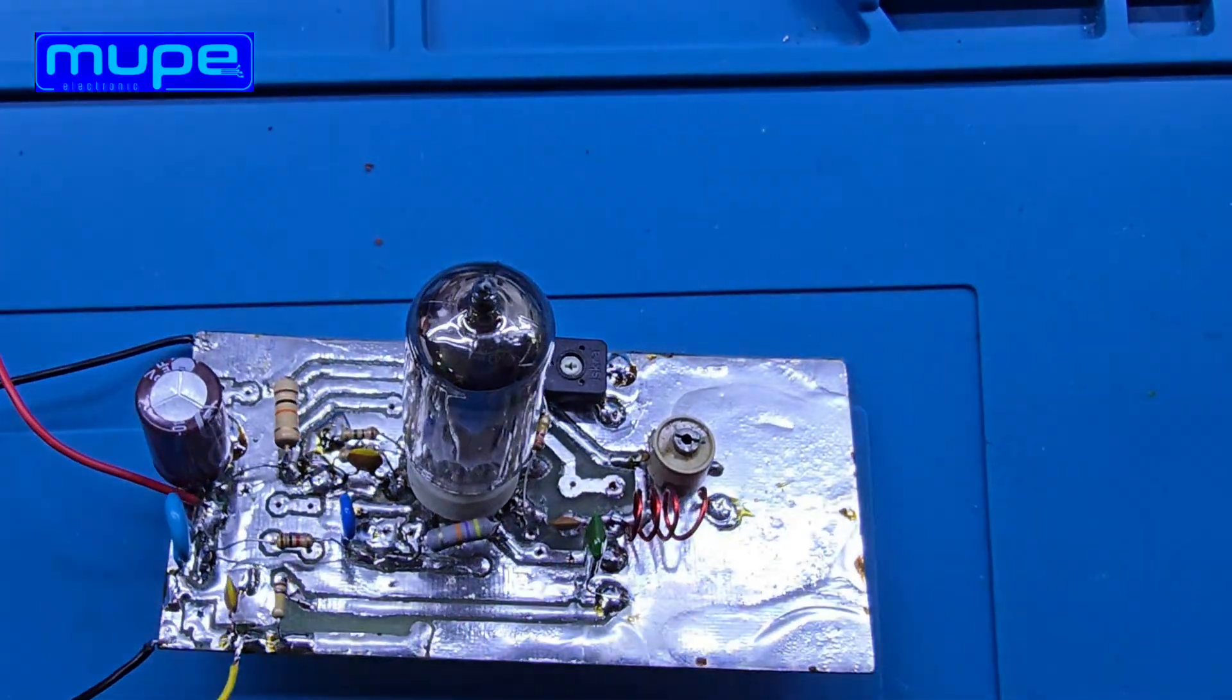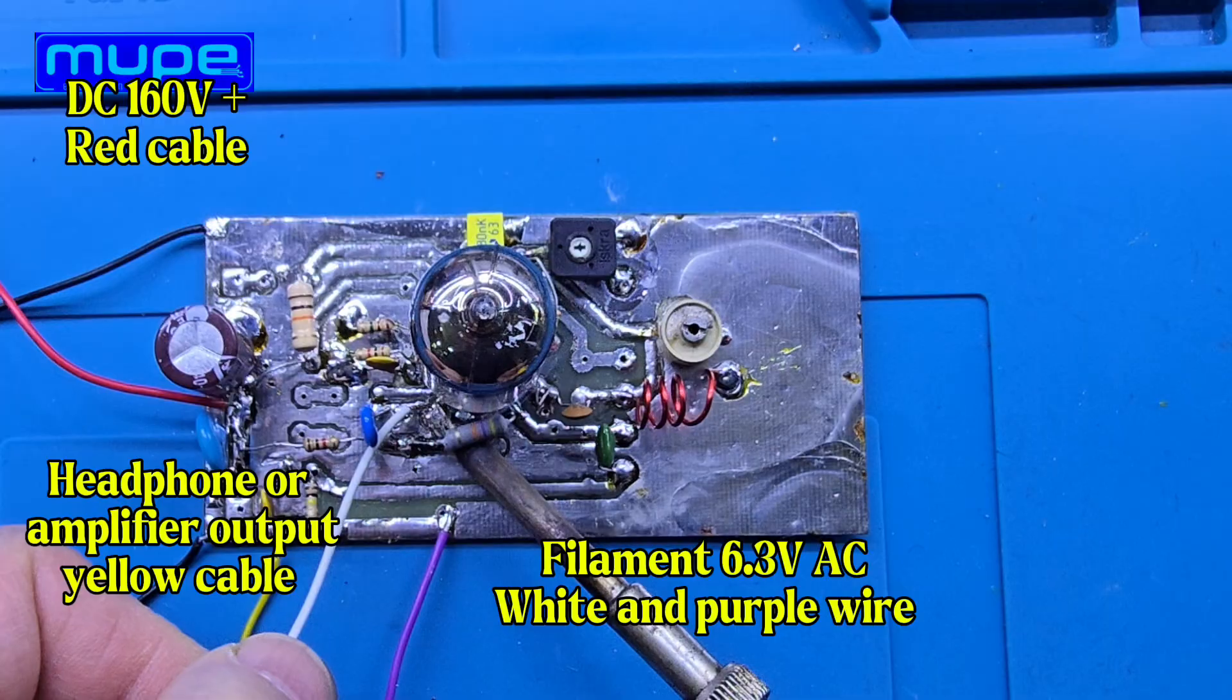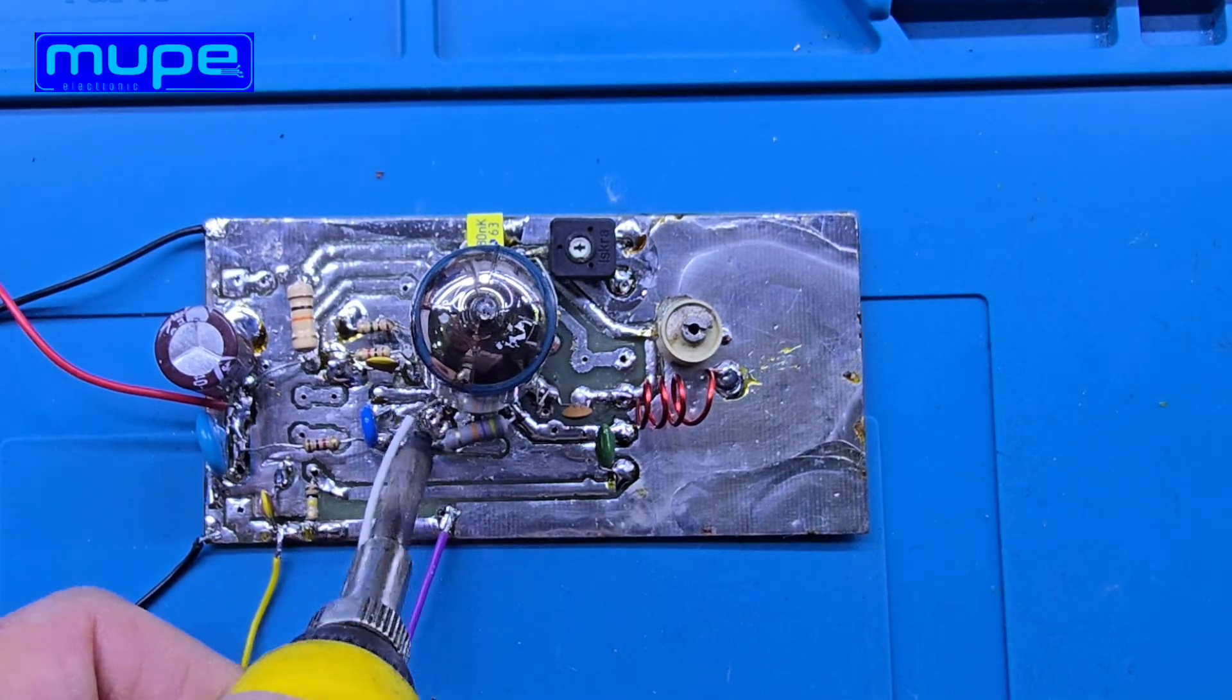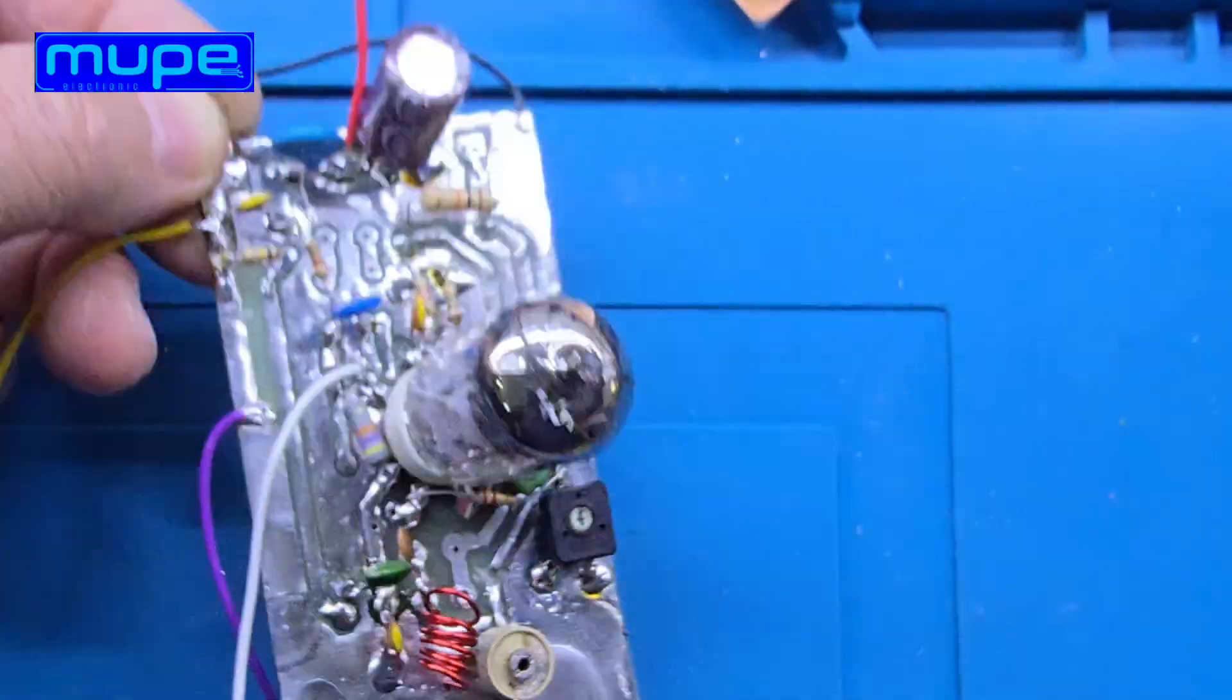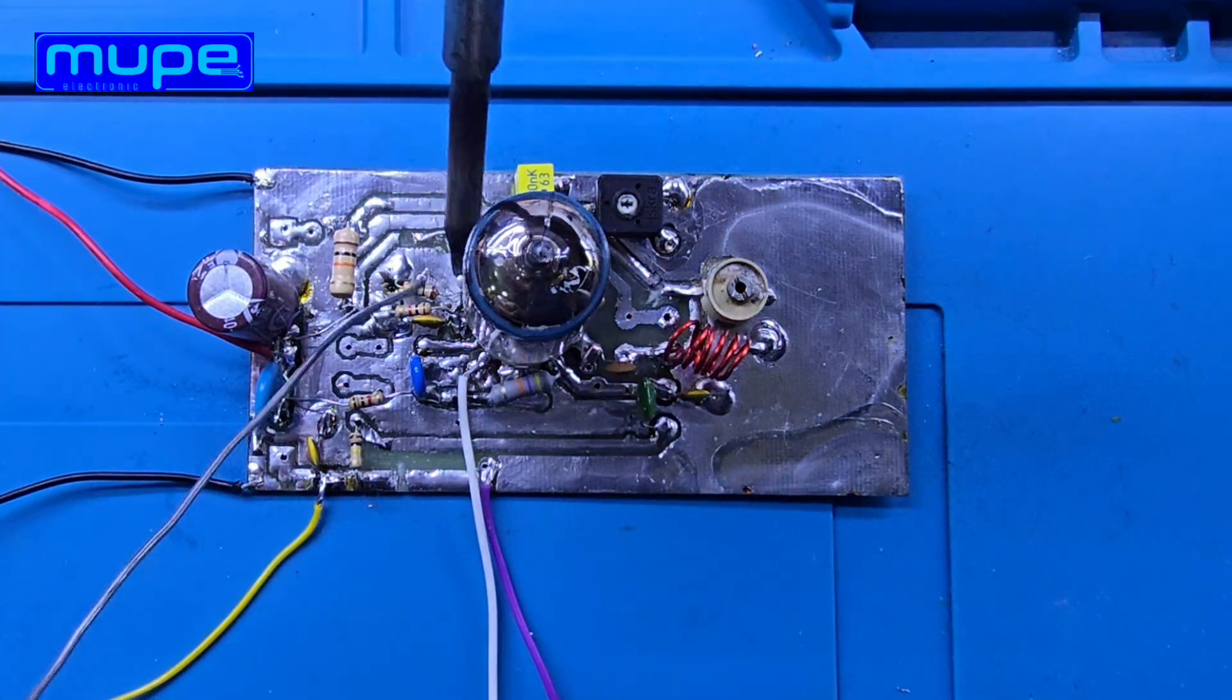Using higher capacitor values increases regenerative gain excessively, which can destabilize the circuit and introduce spurious oscillations. Therefore, sub-picofarad coupling is critical for maintaining stable, controllable regeneration and clean RF performance.